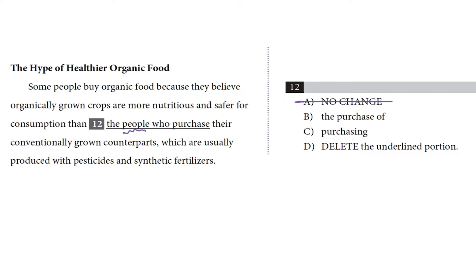Choice B: organic crops are more nutritious and safer to eat than the purchase of their conventionally grown counterparts. Now we're comparing organic fruit and vegetables to the buying process of conventionally grown fruit and veg — comparing fruit to the act of buying fruit. That's illogical, so cross off B. Choice C is 'purchasing,' which is basically the same as choice B. Remember, when two choices on the SAT are functionally identical, they can't both be right, which means they must both be wrong. Cross off choice C.